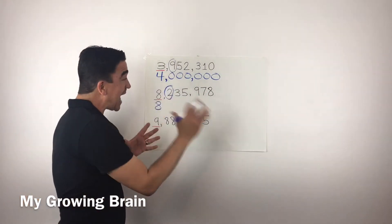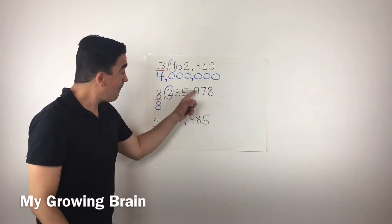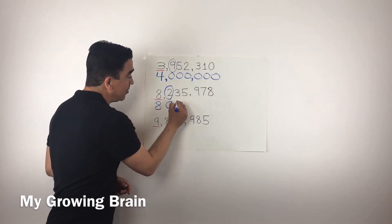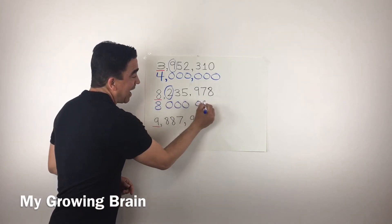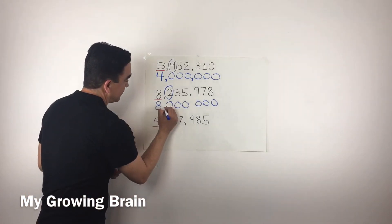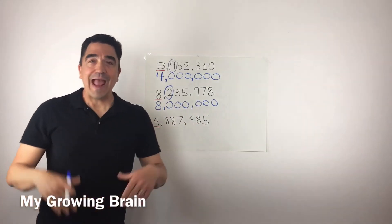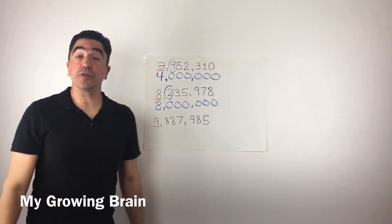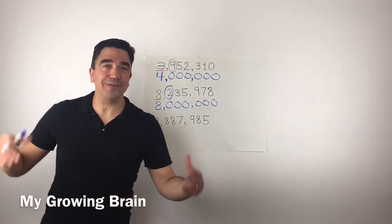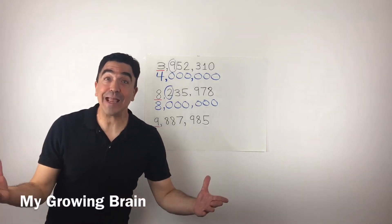All the digits after are going to become zero — one, two, three, four, five, six. Don't forget the comma. So, eight million, two hundred thirty-five thousand, nine hundred seventy-eight rounded to the nearest million is eight million.